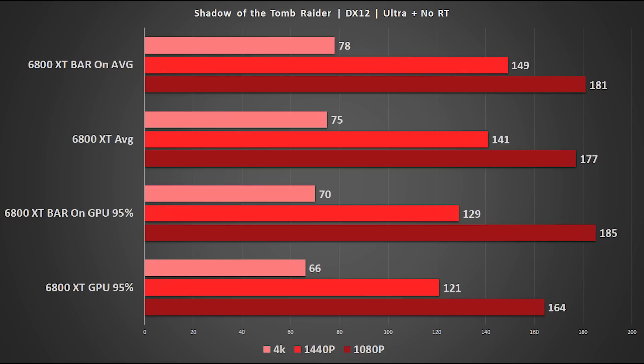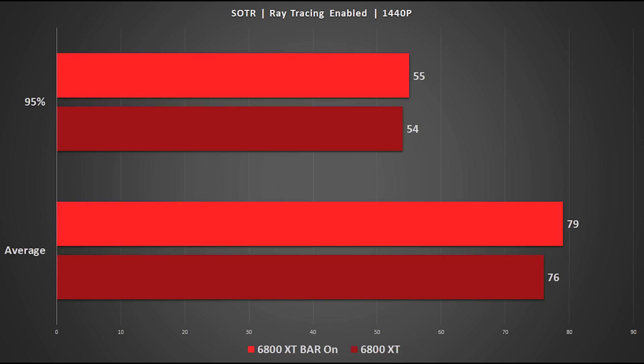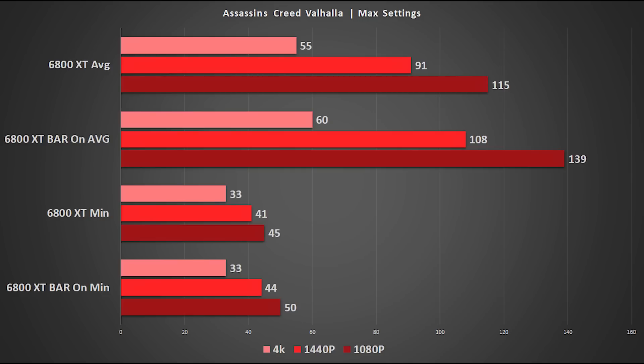Shadow of the Tomb Raider with ray tracing enabled at 1440p: 76 goes to 79. We also gain a whole 1 FPS with the minimums, which is not exactly a big deal. Next up is Assassin's Creed Valhalla — we gain 5 FPS at 4K. Minimums are still pretty low with the built-in benchmark, 33 for both resizable bar on and off. At 1440p, 91 goes to 108, and we actually see a similar leap at 1080p as well — this game is really demanding on the GPU, so we go from 115 to 139.